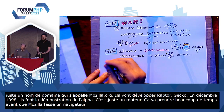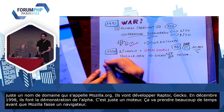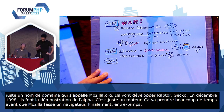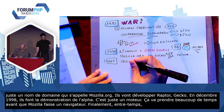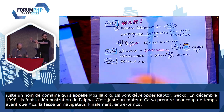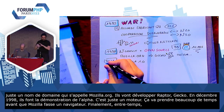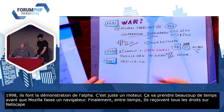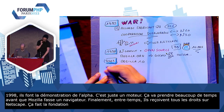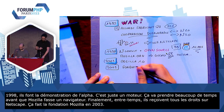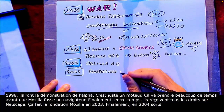Entre-temps, AOL décide d'arrêter de financer Mozilla. Il leur file 2 millions de dollars, tous les droits sur Netscape, etc. Et c'est bon, foutez-nous la paix. Et ça fait la fondation Mozilla en 2003. Et finalement, en 2004, sort le 9 novembre Firefox 1.0. En un an, ils vont prendre un utilisateur sur 10 à Internet Explorer.